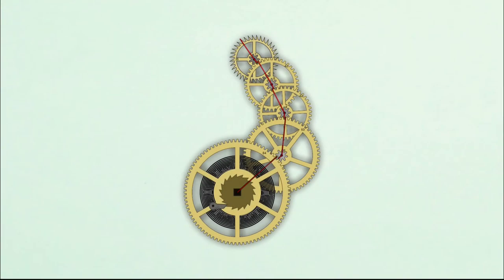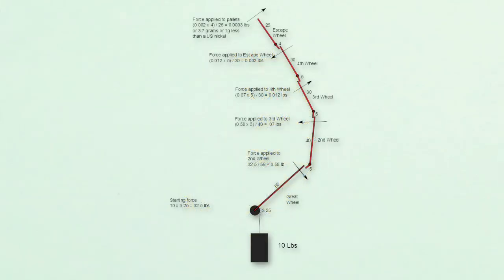Let's look at how the power and torque is distributed through the going train. Here we have the going train with levers superimposed over the wheels. Here is a typical wheel train with the wheels replaced by levers.